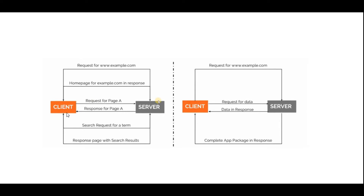If the client clicks on page A, page B, or page C in the header, a new request goes to the server and the server responds back with that page — loading all the HTML and everything again; the full page is reloaded. If the client is searching for some terms like 'hello' or something, again the client sends a request to the server and the server responds back with the search results. So basically we are interacting with the client and server again and again.